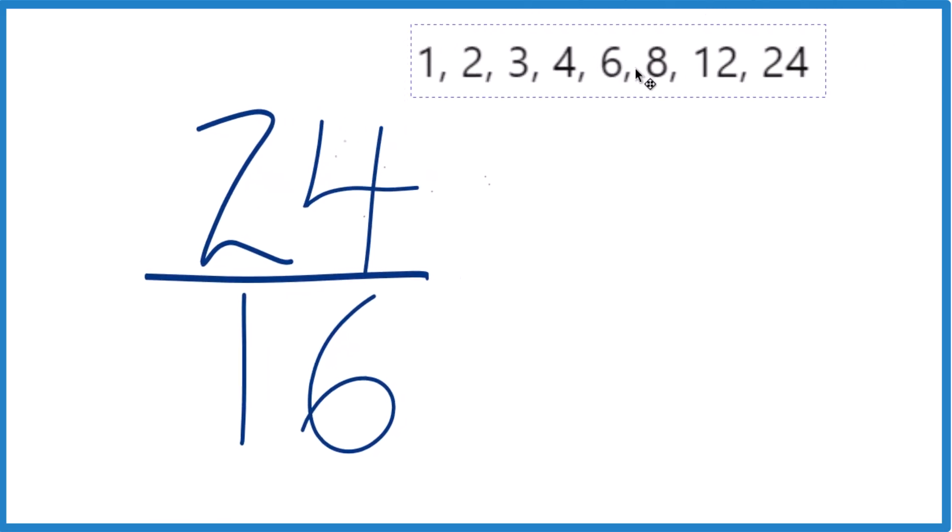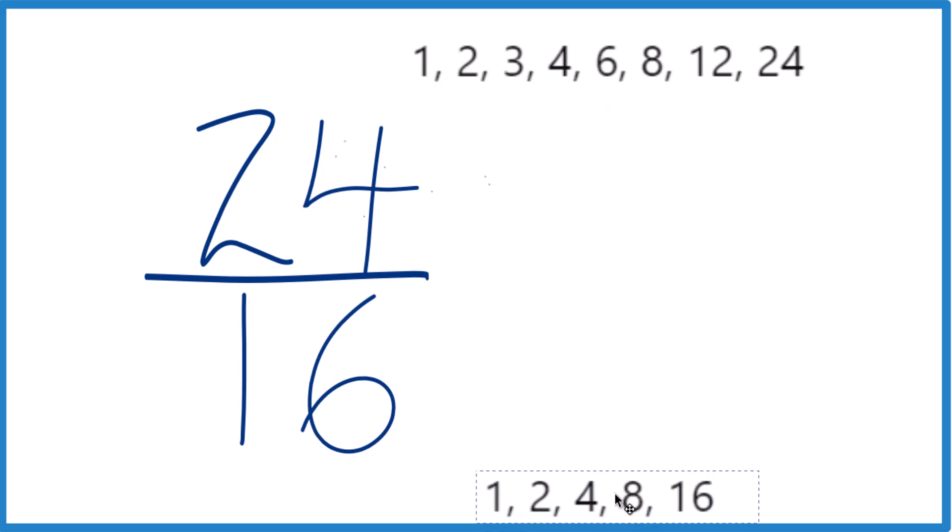So here's 24 and here are the factors of 16. So 1 times 24 is 24, 2 times 12, 3 times 6, 4 times 6, same down here like that.